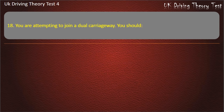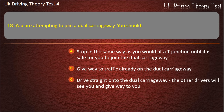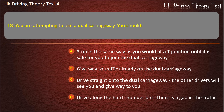Question 18. You are attempting to join a dual carriageway. You should: stop in the same way as at a T-junction until it is safe; give way to traffic already on the dual carriageway; drive straight onto it as other drivers will give way; or drive along the hard shoulder until there is a gap. Answer: Give way to traffic already on the dual carriageway.